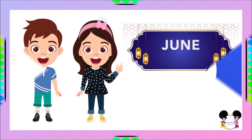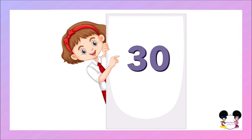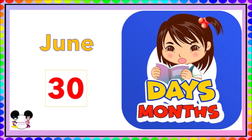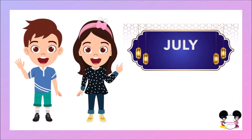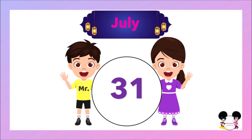June — how many days does June have? 30 days. June has 30 days. The next one is July — how many days does July have? It's 31 days. July has 31 days.